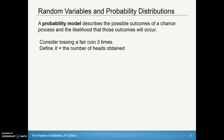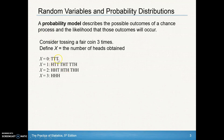Let's consider tossing a fair coin three times. The event X is the number of heads obtained. We can look at the situation where X equals zero — we get zero heads if we flip a coin three times and get tails, tails, tails. There are three different ways of getting one head: the head on the first flip then tails, tails; or tails, heads, tails; or tails, tails, heads. There are three total outcomes that have exactly one head.